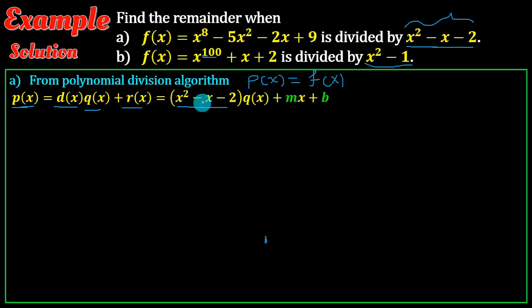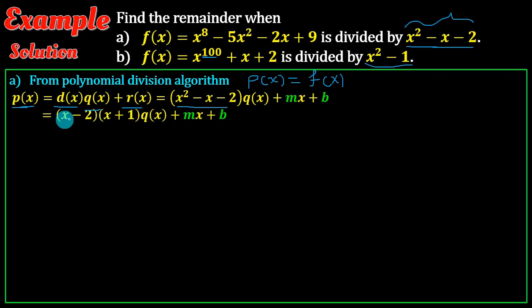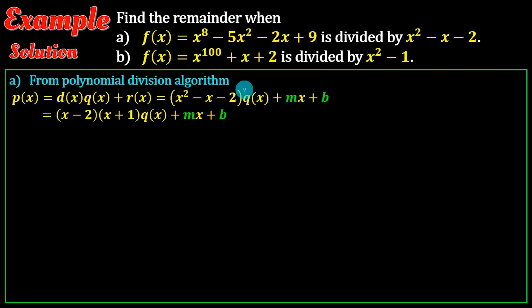The value of x squared minus x minus 2 factorizes. We get x minus 2 times x plus 1. The remainder is of the form mx plus b.